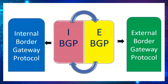EBGP has a built-in loop prevention mechanism: routers will reject routes that contain their own AS. For example, if two routers belong to the same AS and exchange routes, those routes will be rejected because the router recognizes the route was learned from the same AS. This mechanism is available by default in EBGP.